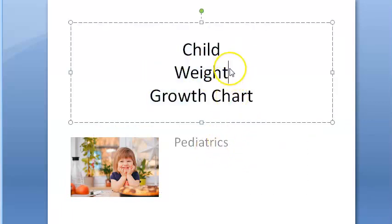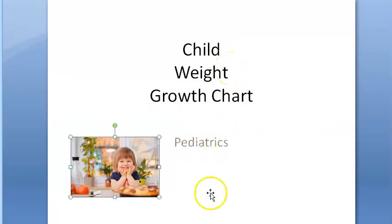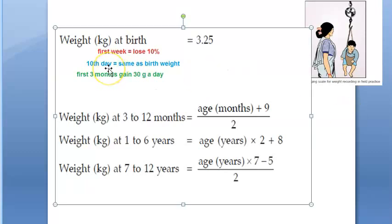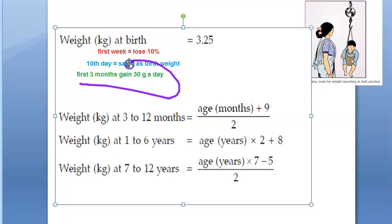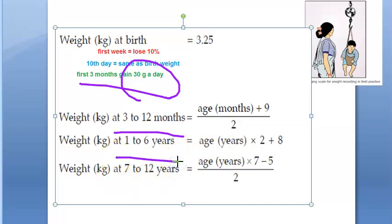This applies to all children — boy or girl. At birth, the ideal average weight is 3.25 kgs. First week: lose 10%. By the 10th day: back to birth weight. Up to 3 months: gain 30 grams per day. Formula from 3 to 12 months: months plus 9, divided by 2. From 1 to 6 years: years × 2 + 8. From 7 to 12 years: years × 7 − 5, divided by 2.